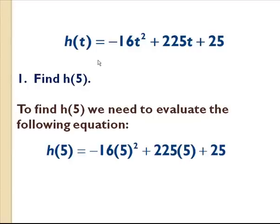So you can see I've replaced all of my t's with 5. So instead of negative 16t squared we have negative 16 times 5 squared and so on.